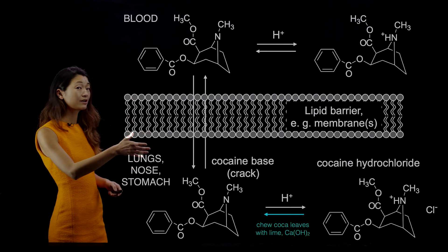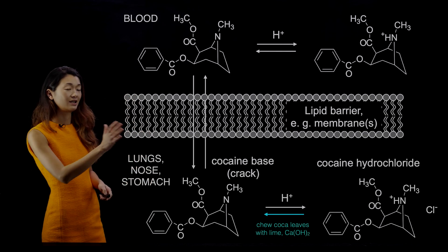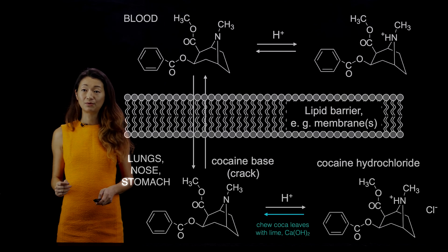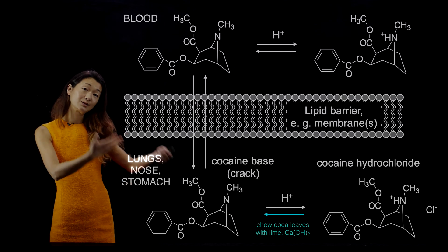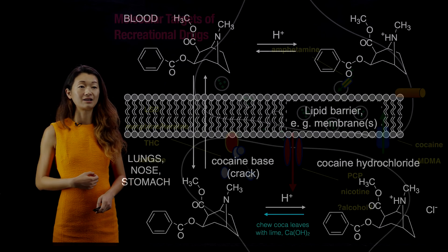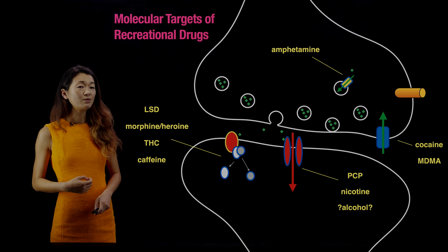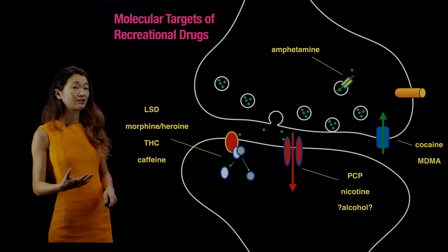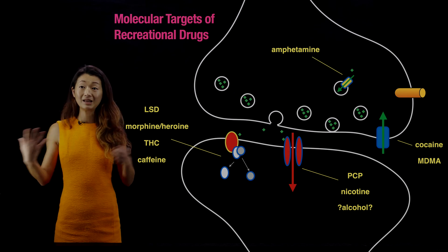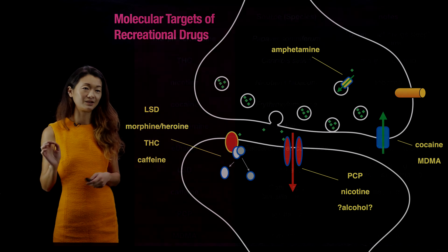Crack cocaine has a much easier time passing through the stomach-to-blood barrier and into your blood. So if you were wondering why crack cocaine is so much more effective than cocaine, and why chewing coca leaves also makes cocaine more effective, this piece of chemistry explains that observation. Now, going back to the molecular targets of recreational drugs — once you're in the blood and in the brain, where are we going next?